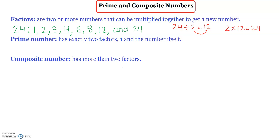Now, prime number. A prime number has exactly two factors: 1 and the number itself. For example, let's think about 3. So 3 is a prime number because I can do 1 times 3, or I can do 3 times 1.